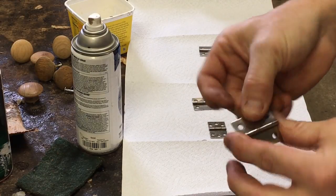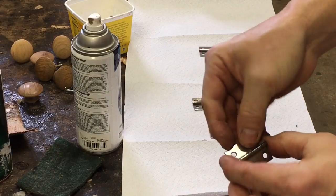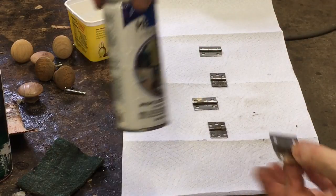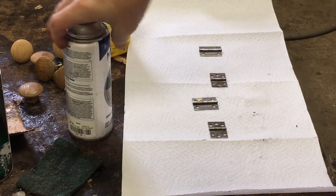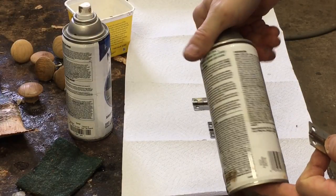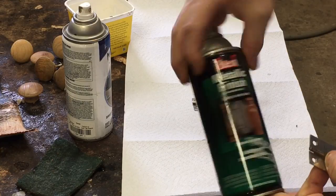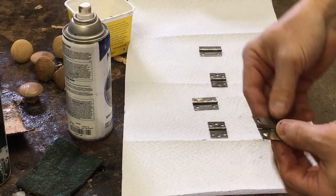Now we want to spray them and make them look like brass again. So we can use a metallic spray. This happens to be gold. There's also a brass colored. They're almost identical. Either one will work fine.